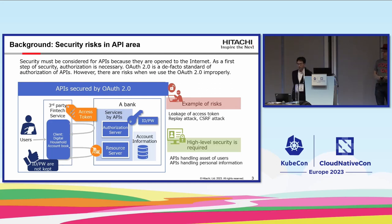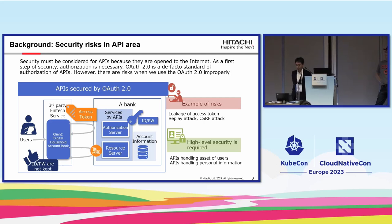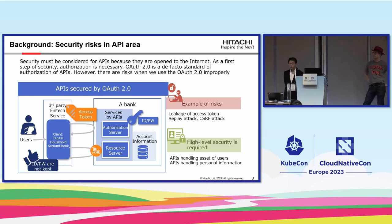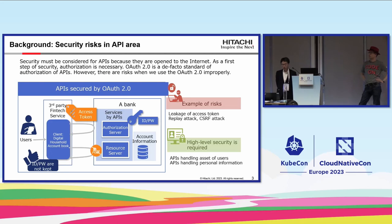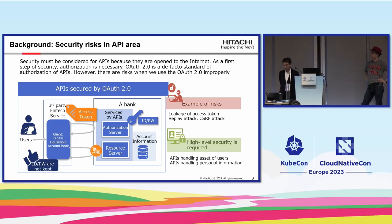To authorize APIs, OAuth 2.0 is the de facto standard. A simplified example: a bank opens an API to a client third-party fintech service. The client accesses the authorization server; if the user and client are authenticated, the authorization server issues an access token. The client calls the API with that access token, and the resource server verifies it and returns the resource — such as balance information.